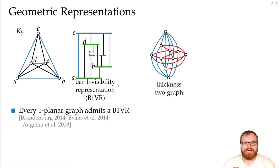We can also use visibility between larger objects. If we have thickness 2 graphs, that means that we can decompose the edges into blue and red edges, and both the blue and the red graph are planar. This is always the case for 1-planar graphs, they always have thickness two.